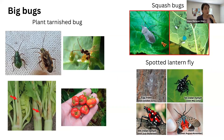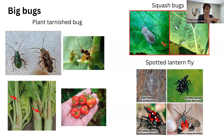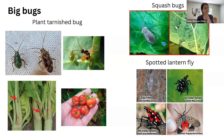Squash bugs mostly attack cucurbits — squash, cucumber, pumpkins. Their eggs are very distinctive: reddish-orange and very bright, found underneath or sometimes above the leaves. If you remove them, you're avoiding their damage at the earliest stage, so it's good to look for their eggs.